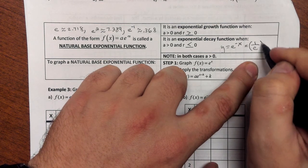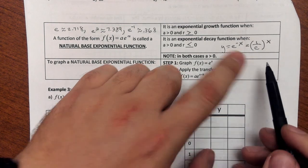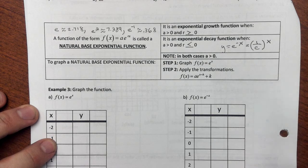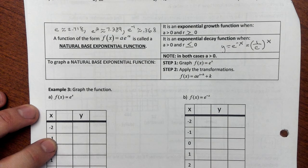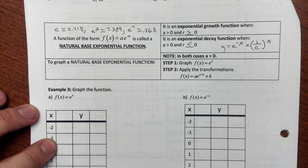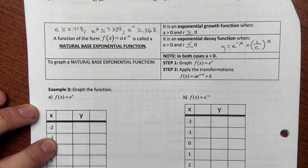Well, that negative exponent means I actually have a reciprocal, and what I would have is 1 over e to the x. Since e is about 2.7, 1 over e is a number between 0 and 1, which is what gives us exponential decay. Alright, so to graph a natural base exponential function, you're going to graph f(x) equals e to the x and apply whatever transformations.